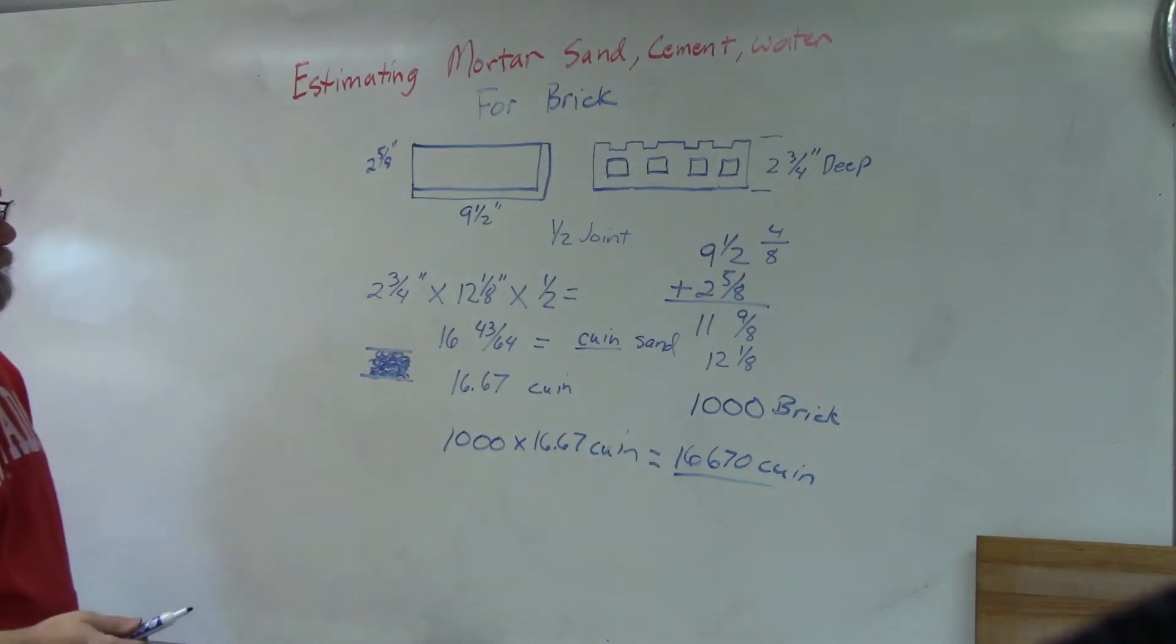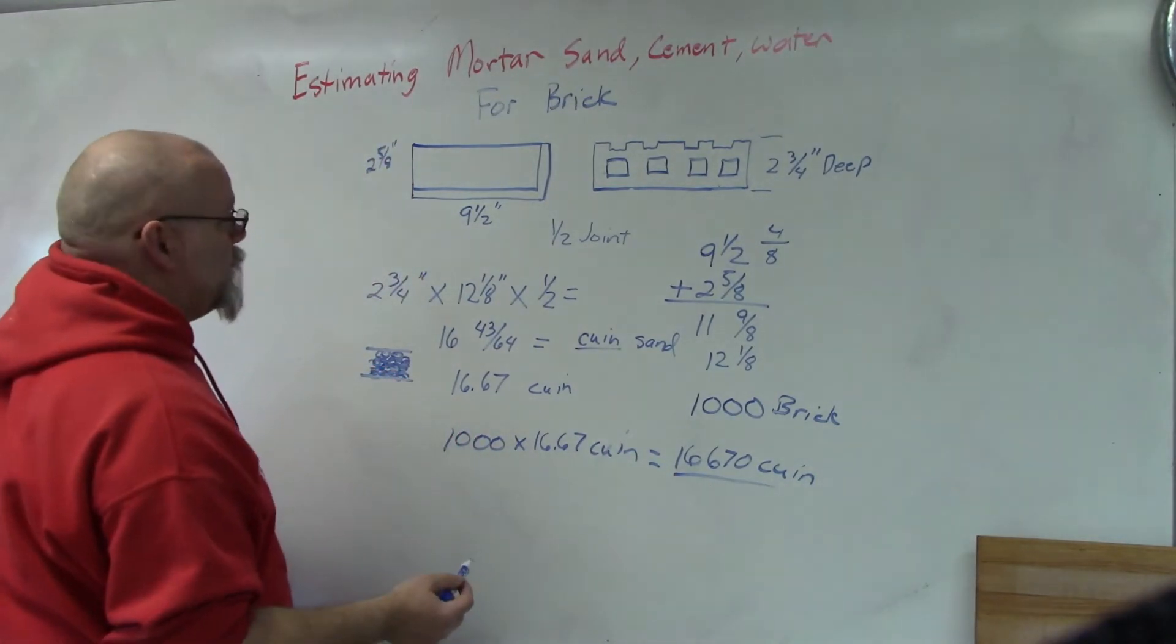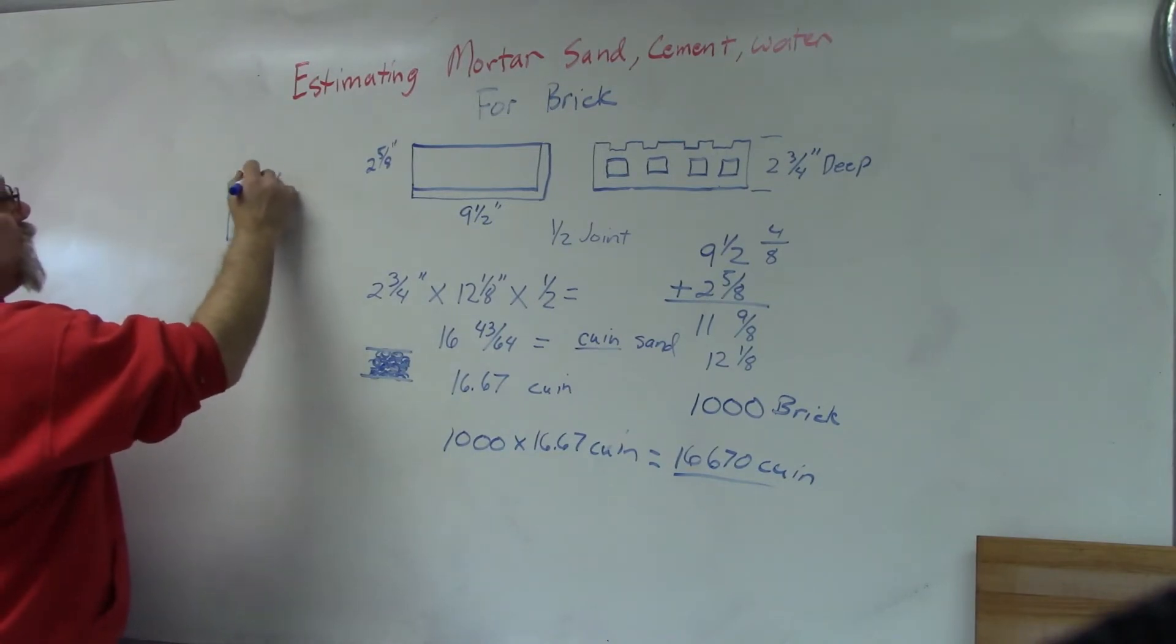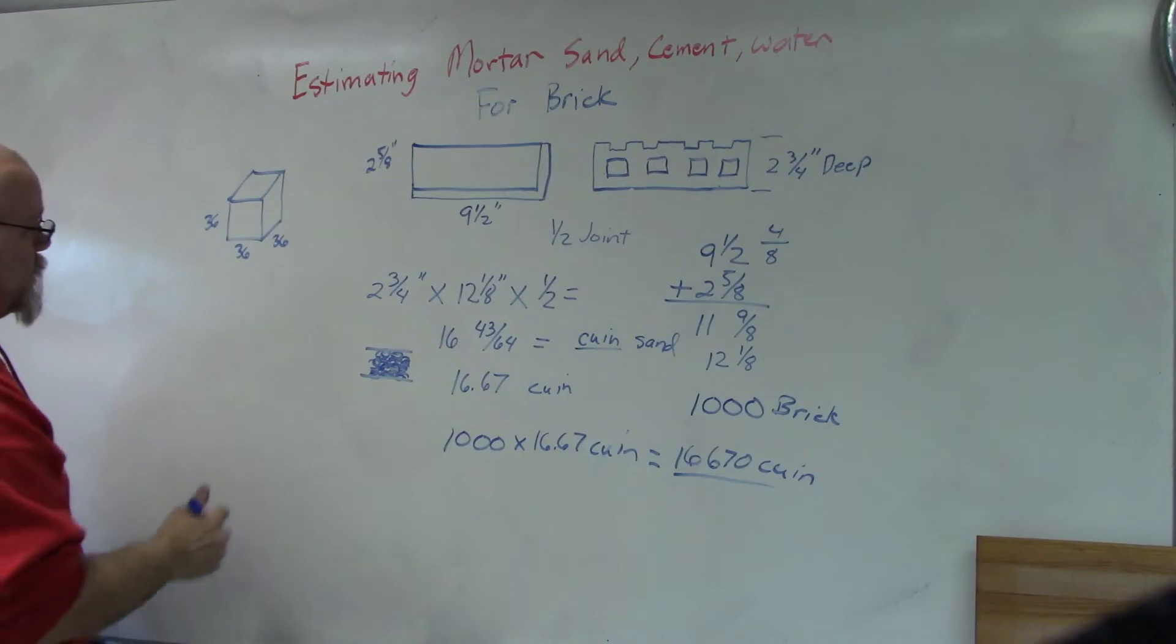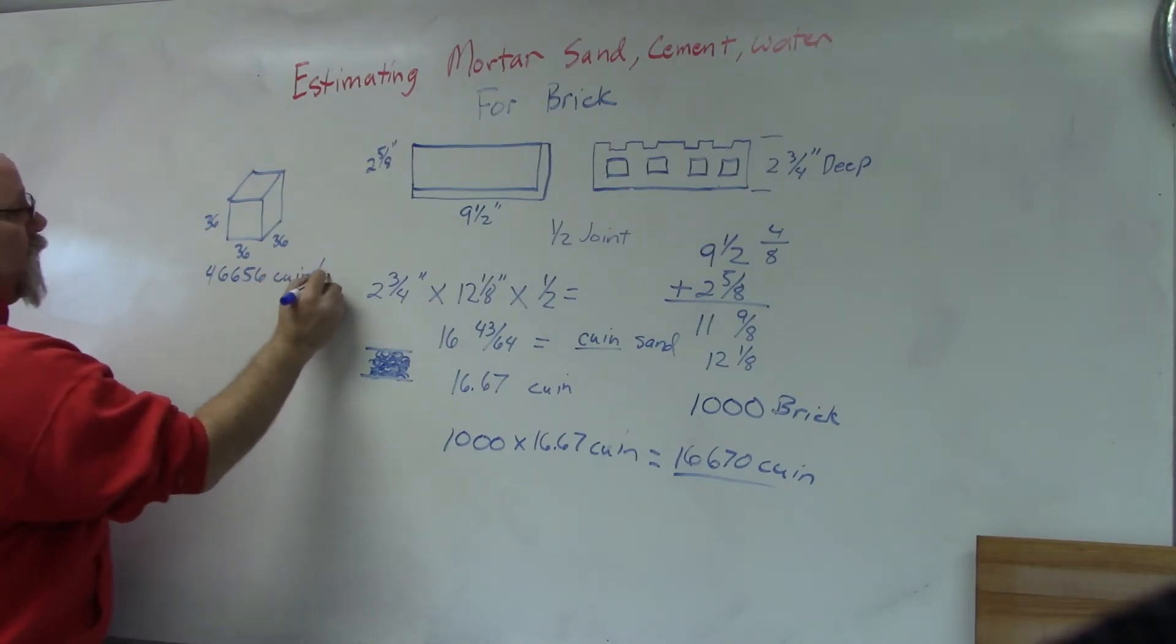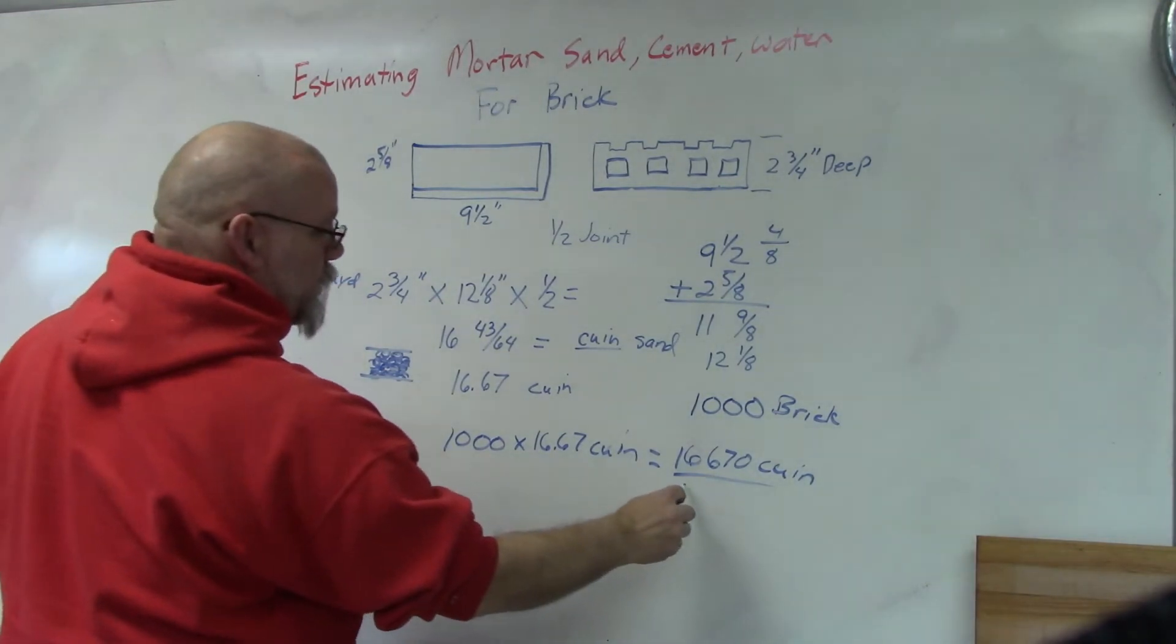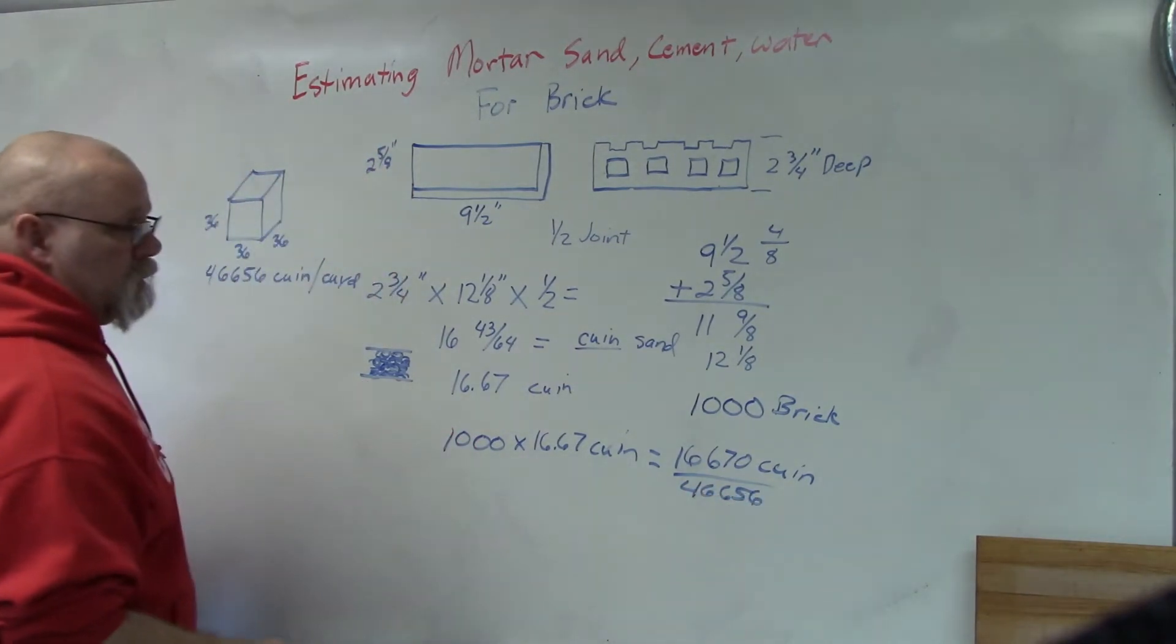So we need 16,670 cubic inches. If we wanted to convert that into cubic yards, we would figure out how many cubic inches are in a cubic yard. So 36 times 36 times 36 gives me 46,656 cubic inches in a cubic yard. So then I would divide this by 46,656 and that would tell me how many cubic yards I need.